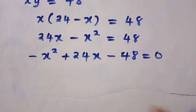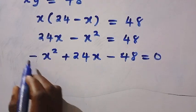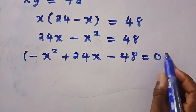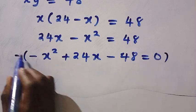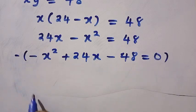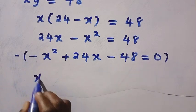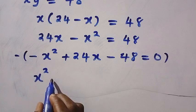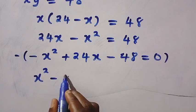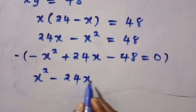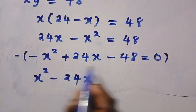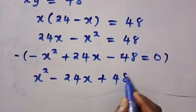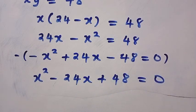In the next step, we are going to multiply all terms by negative one. So, minus times minus gives plus X squared; minus times plus gives minus 24X; minus times minus gives plus 48 equals 0.